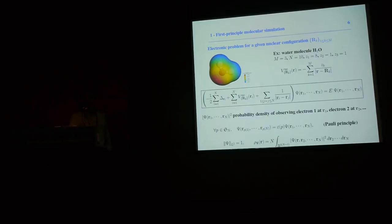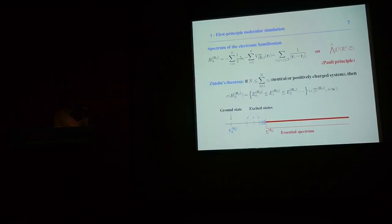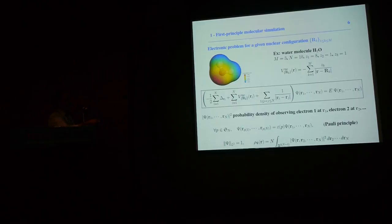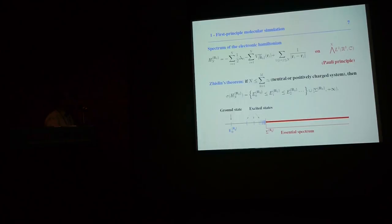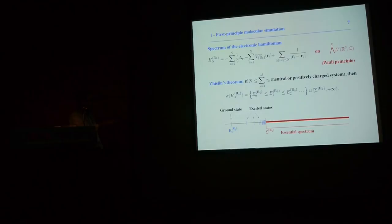The set of solutions to this equation can be obtained by studying the spectral properties of the operator H_N, which is a linear operator on the space of anti-symmetrized wave functions — the anti-symmetrized tensor product of N copies of the one-particle space, i.e., square-integrable functions of N variables satisfying the anti-symmetry condition. From Zhislin's theorem, for any neutral or positively charged system — such as the water molecule — the spectrum of the electronic Hamiltonian has a universal structure.